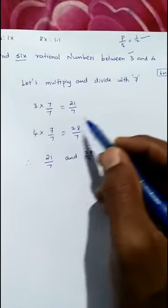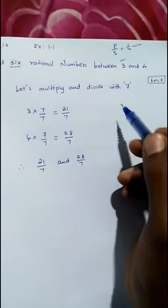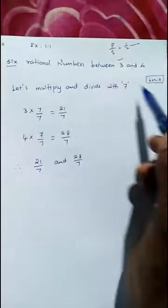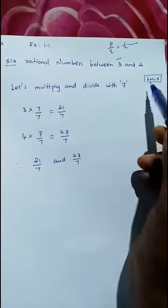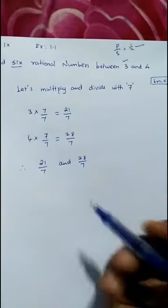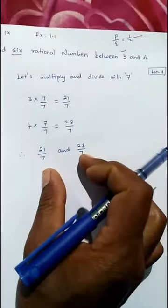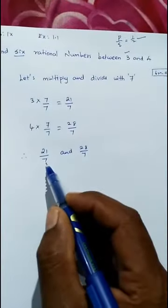Just for the rational number, we are multiplying with 7. Why we have to take 7? If you want six numbers, multiply with 7 and divide with 7. Or suppose you want five, then you take 6 by 6 - you can add one and take it. Now between this, you can write six rational numbers.